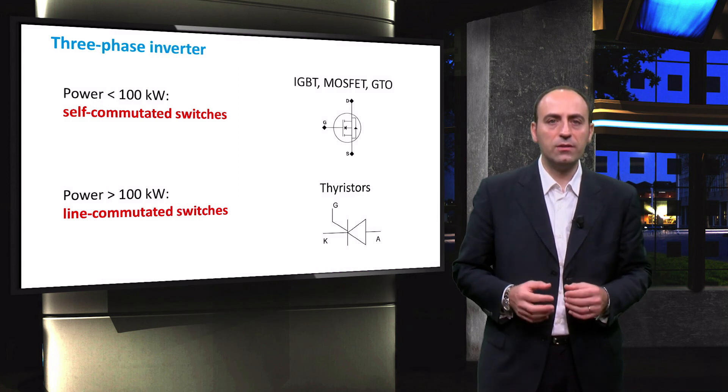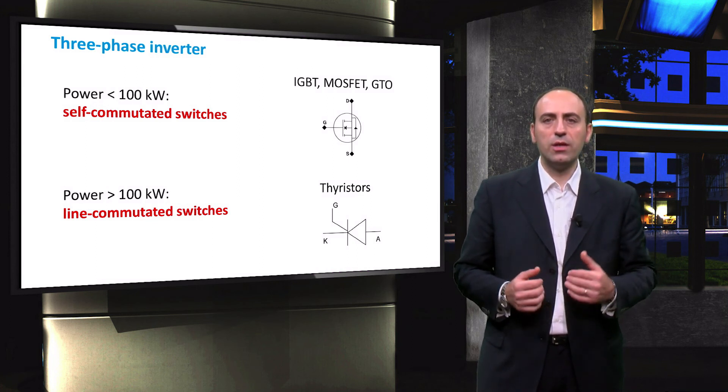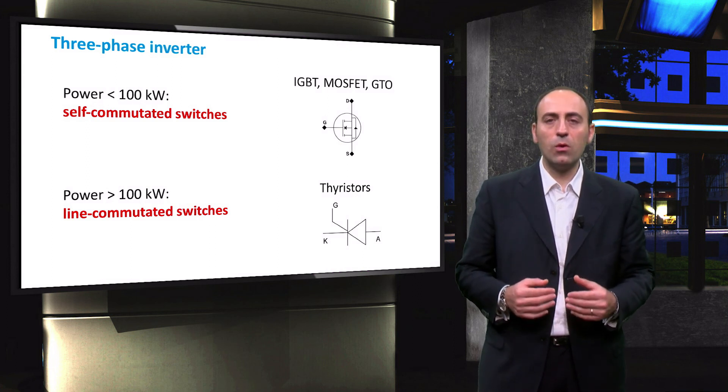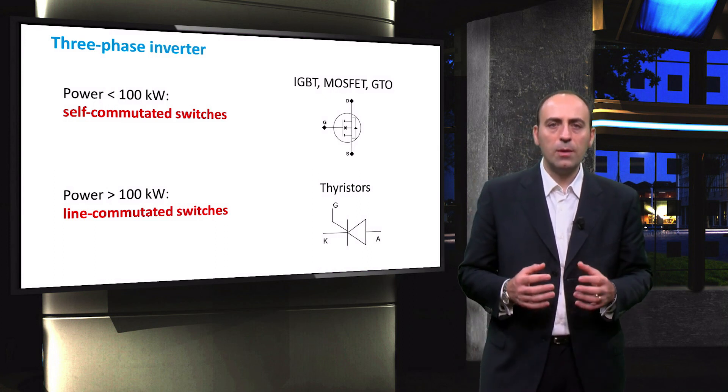When it comes to power higher than 100 kW, line-commutated semiconductor devices, such as thyristors, are chosen. Unlike self-commutated devices, thyristors need an input signal, usually retrieved from the grid, to start conducting. This option is typically employed for high voltage DC and high voltage AC applications.